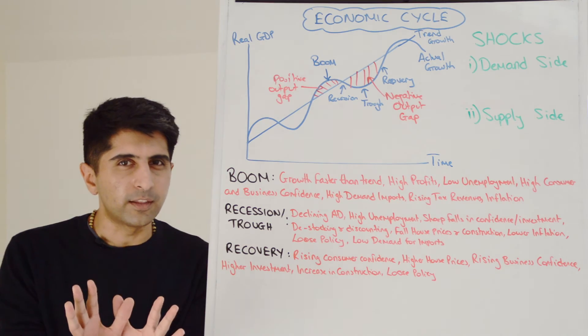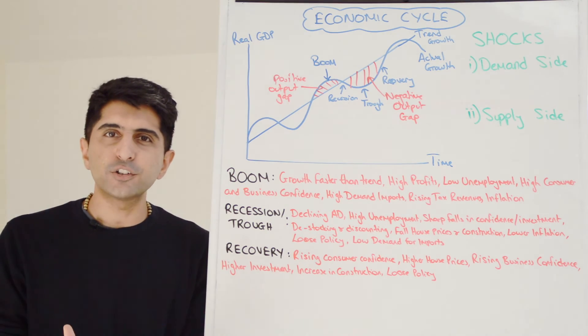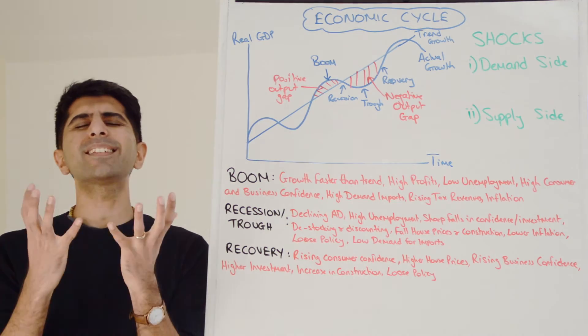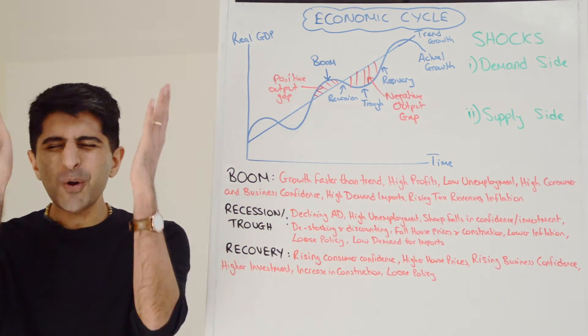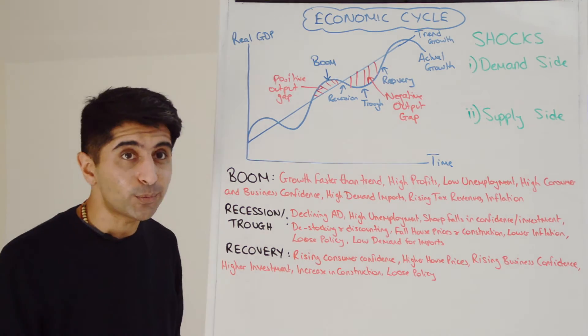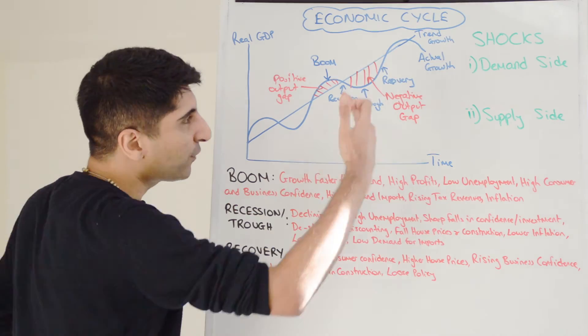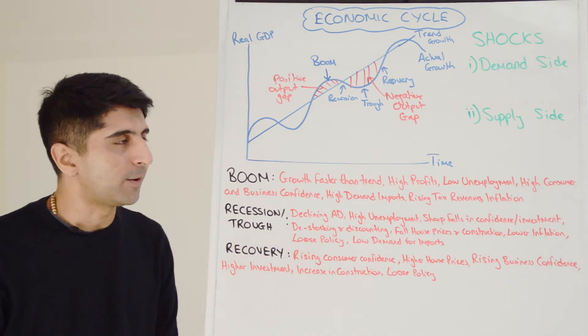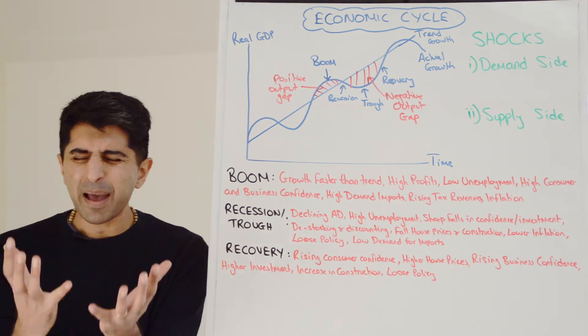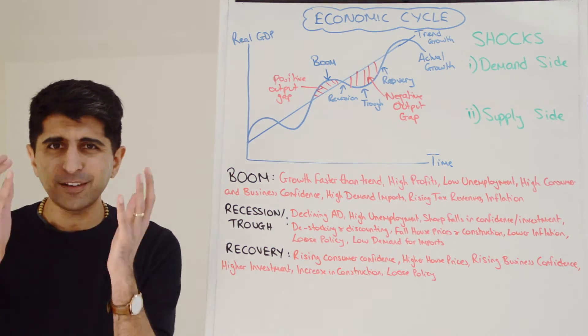What's maybe more interesting, though, is why are there fluctuations in actual growth? Well, the simple answer is shocks. Things can happen in the economy that nobody can foresee, nobody can predict. Shocks. And that's why we don't get this lovely, smooth, upward sloping growth line. We get this fluctuating actual growth line. Shocks. Things happen in the economy which are bad. No one expects them.